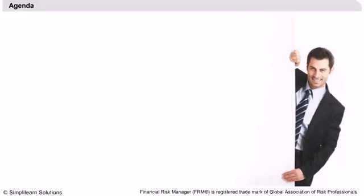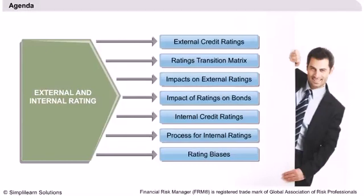Agenda: We will begin with the introduction of external ratings and learn the ratings transition matrix in credit rating agencies. We will also learn the impact of various geographical factors and other factors on external ratings. We will discuss the external factors that have an impact on external ratings and corporate bonds. Next, we will begin with a study of internal credit ratings, its process and various issues involved in establishing internal ratings. We will end with a discussion of various types of rating biases.